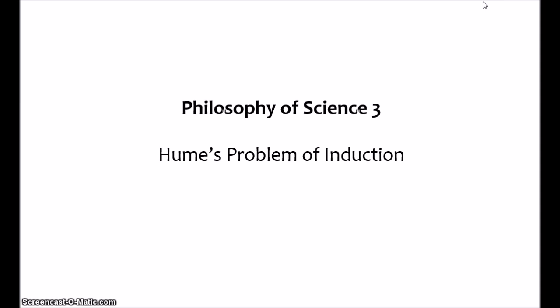As we noted in the first video, science is ampliative. It goes beyond immediate observations to give us knowledge about the world in general, or at least it seems to. But Hume says this isn't possible. Hume's argument is very widely known in philosophy. Many of you watching this will probably be familiar with it, in which case you can skip this video. This will just be a standard presentation of Hume's problem.